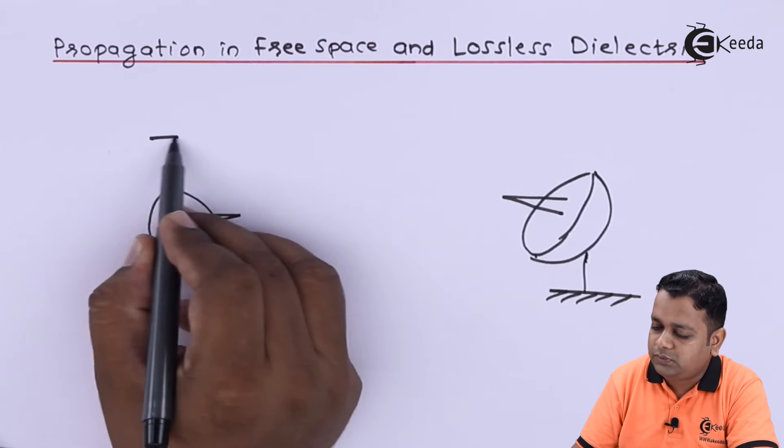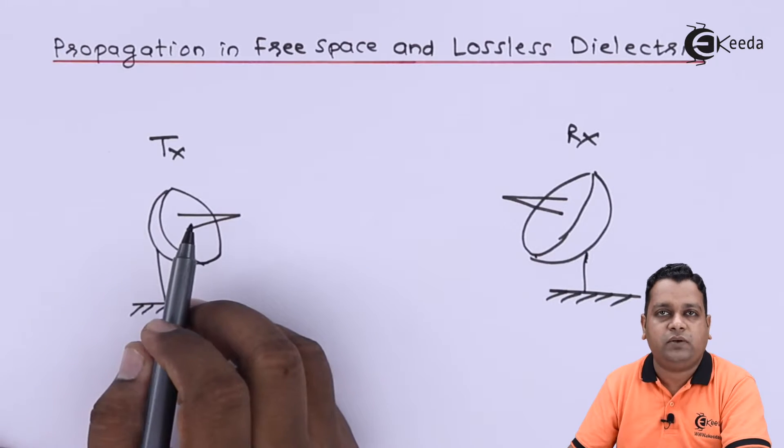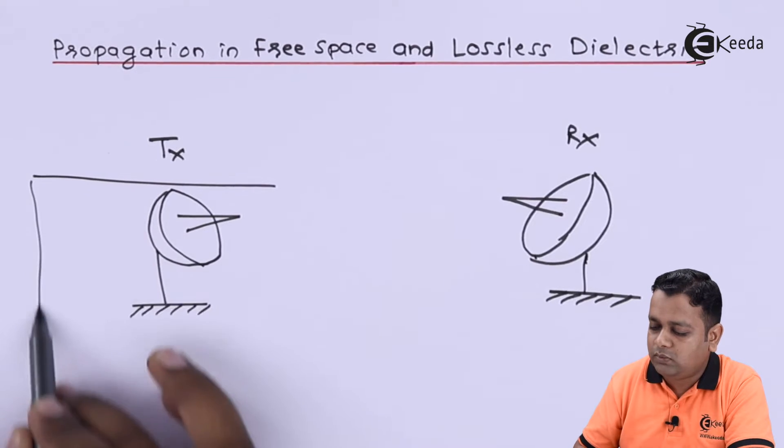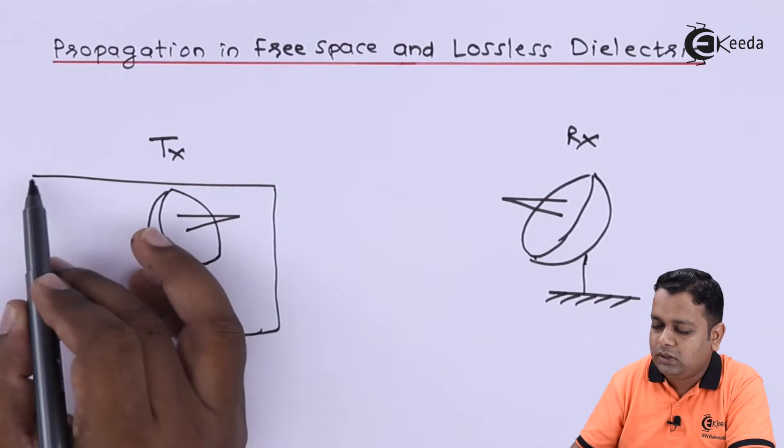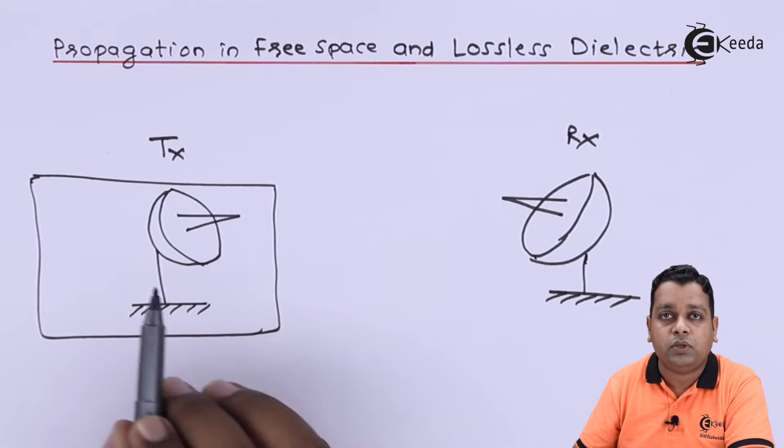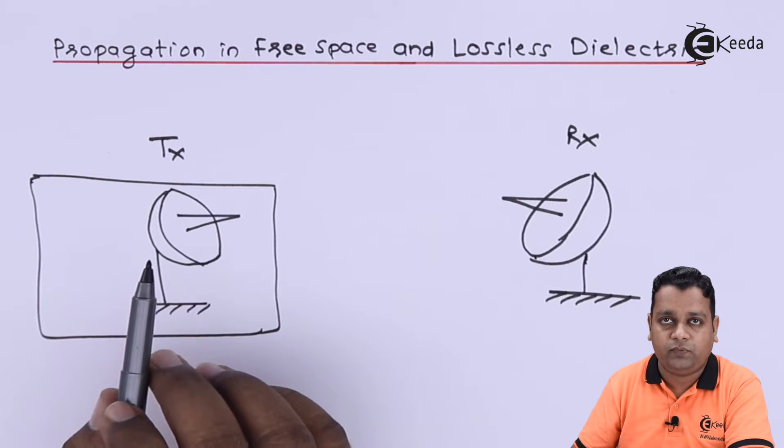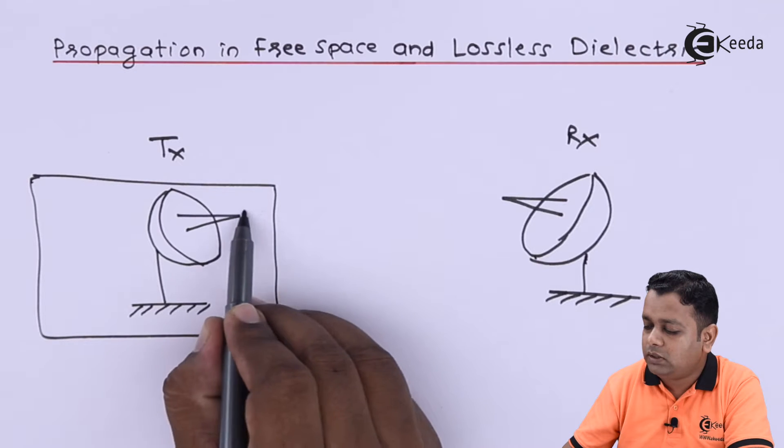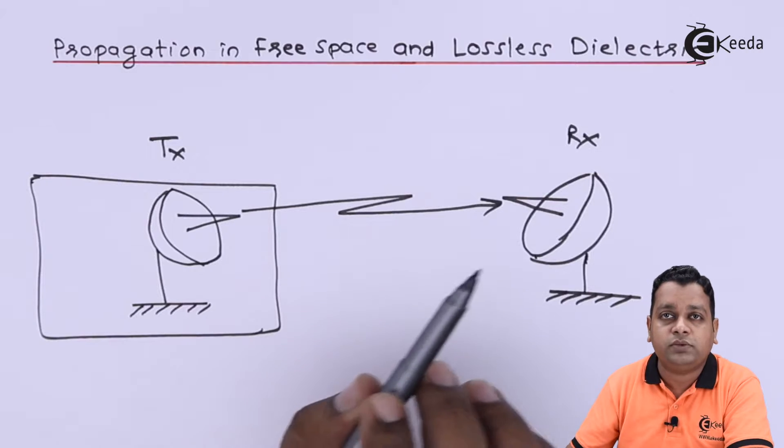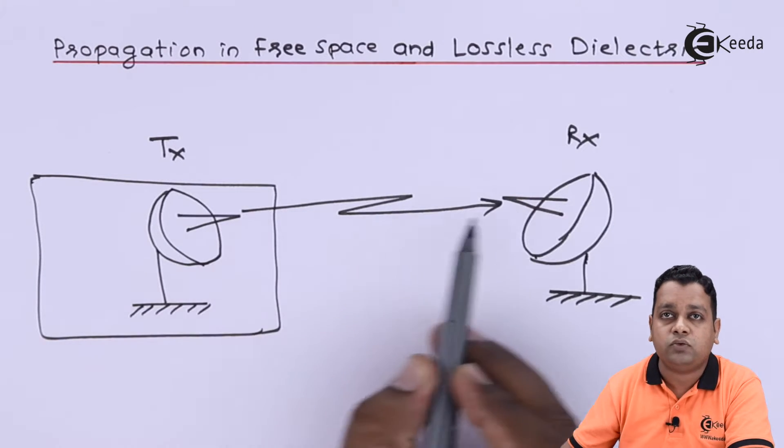Here it is the transmitting side and this is the receiving side. Whenever the microwave is generated by the system associated with the transmitting side, it is further transmitted with the help of this antenna. It is divided into three types of waves. The first wave is the direct wave, going as a line-of-sight communication from the tip of the transmitting antenna to the receiving antenna.